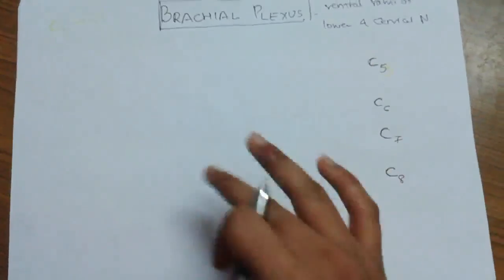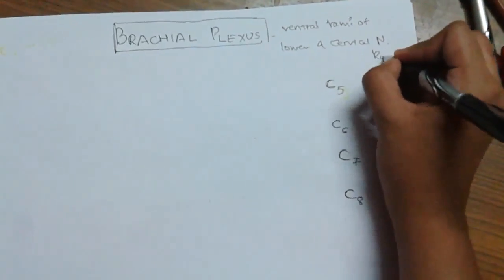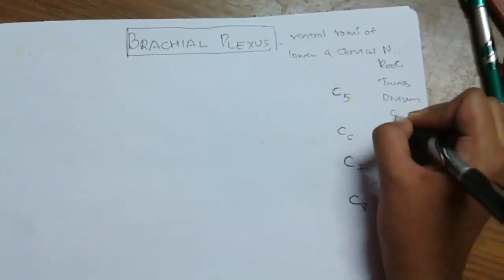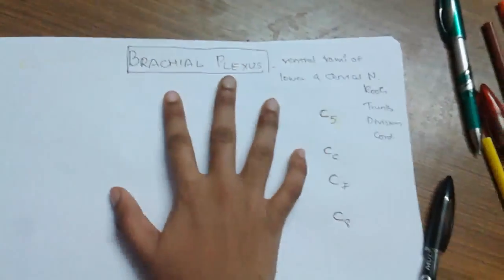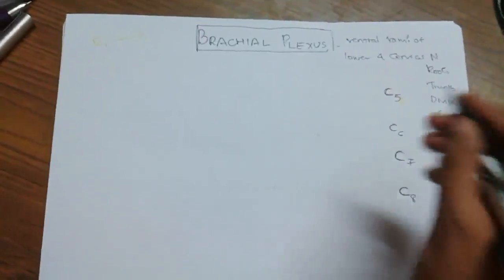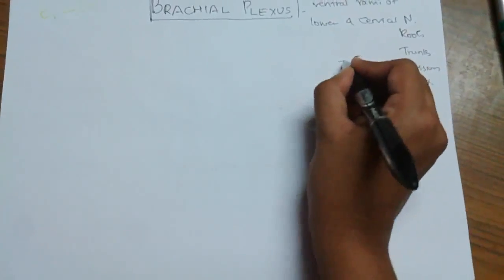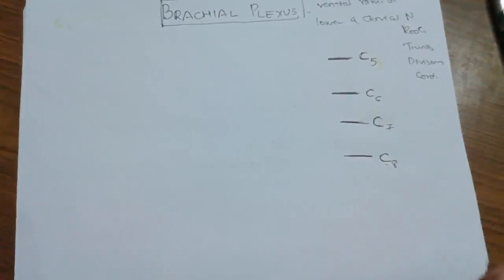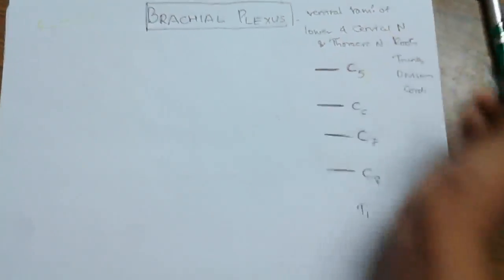The brachial plexus consists of mainly four components: roots, trunks, divisions, and cords. These four are formed from the brachial plexus. From the root: C5 gives a root, C6 gives a root, C7 gives a root, C8 gives a root, and even T1 — lower four cervical nerves and one thoracic nerve — T1 also gives a root.